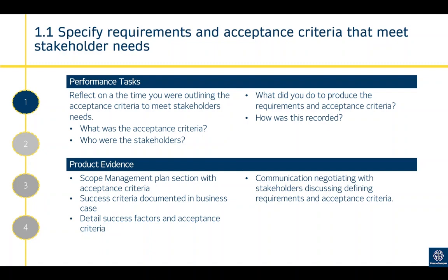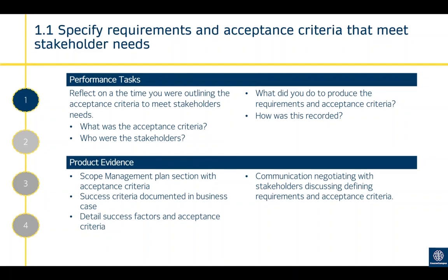Product evidence could be your scope management plan section with acceptance criteria, success criteria documented in a business case, or communications — negotiating with stakeholders, discussing and defining requirements and acceptance criteria. Some form of communication where you're actually engaging with stakeholders or whoever this project is being handed over to, working out what their acceptance criteria is.